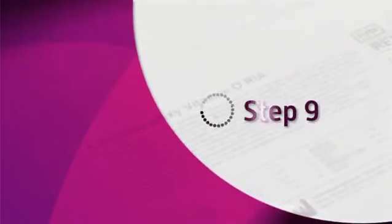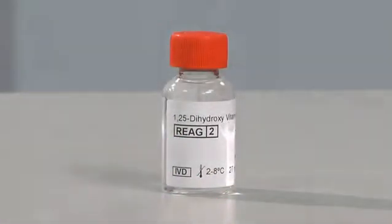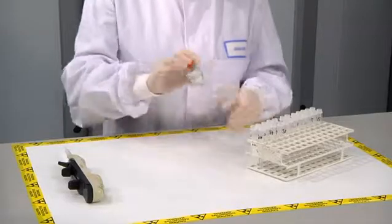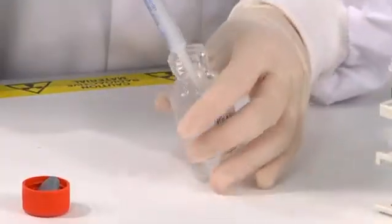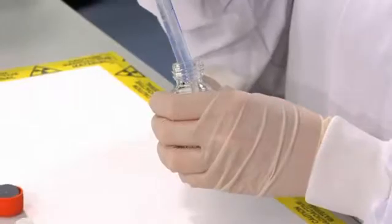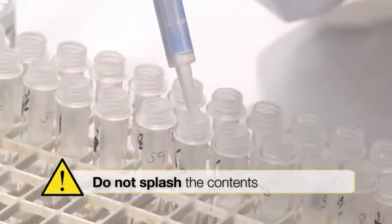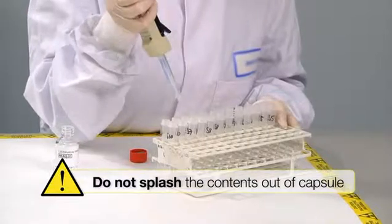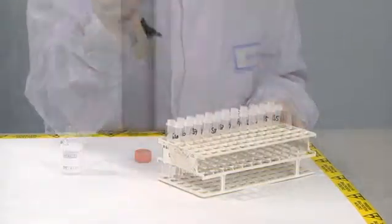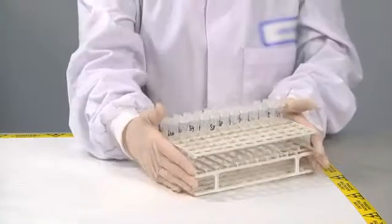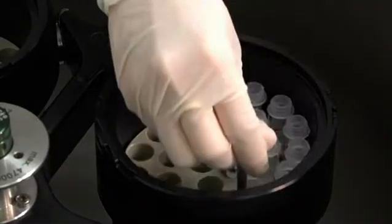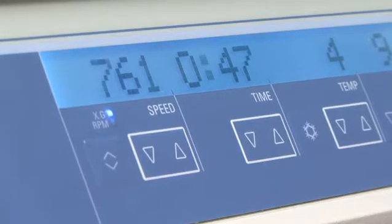Step 9: Add 150 microliters of elution reagent to all immunocapsules using the same technique as for the wash. Allow reagent to soak into solid phase for 1 to 2 minutes. Centrifuge at low speed between 500 and 1000G for approximately 1 minute to collect the eluate.